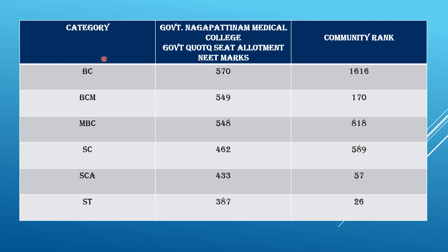BCA cutoff mark is 570 and the corresponding community rank is 1616. BCA mode cutoff is 549 and community rank is 170. MBCA cutoff mark is 548 and community rank is 818.